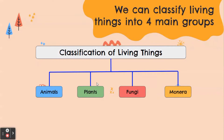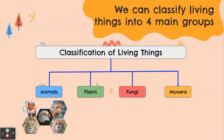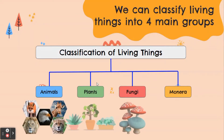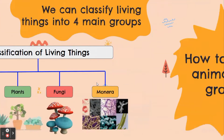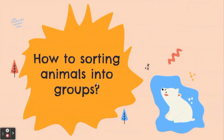What are they? First, animals. Second, plants. Third, fungi. Fourth, monera. So now let's learn how to sort animals into groups.